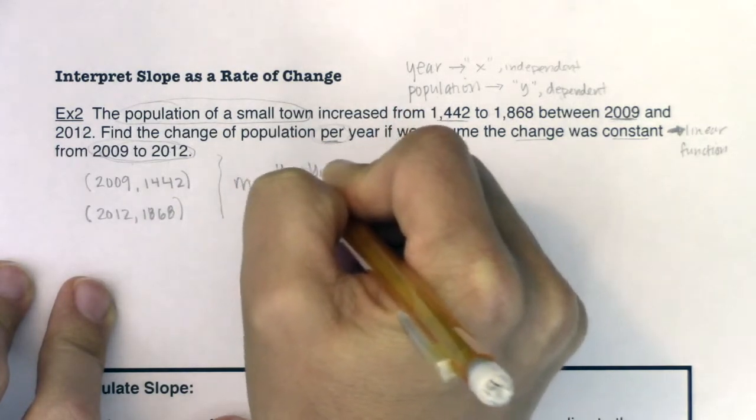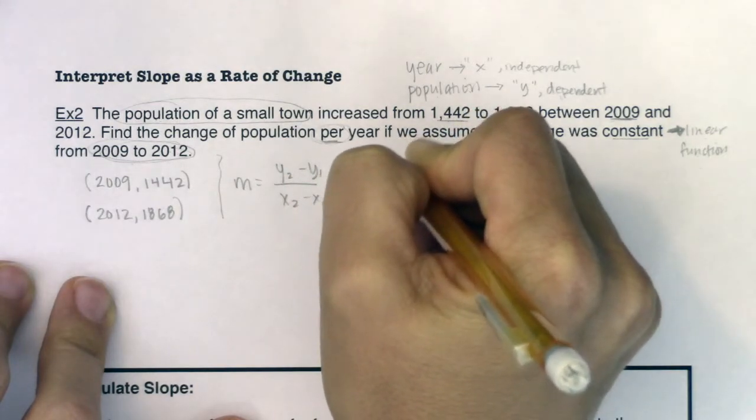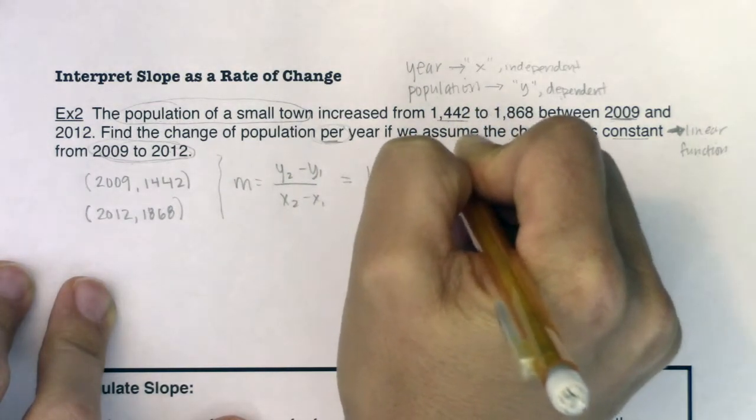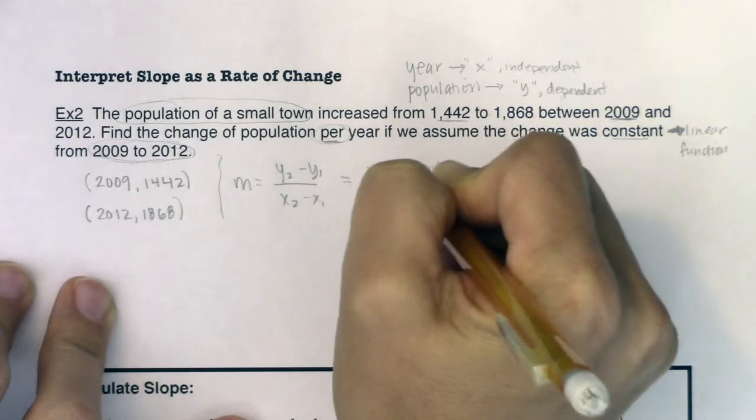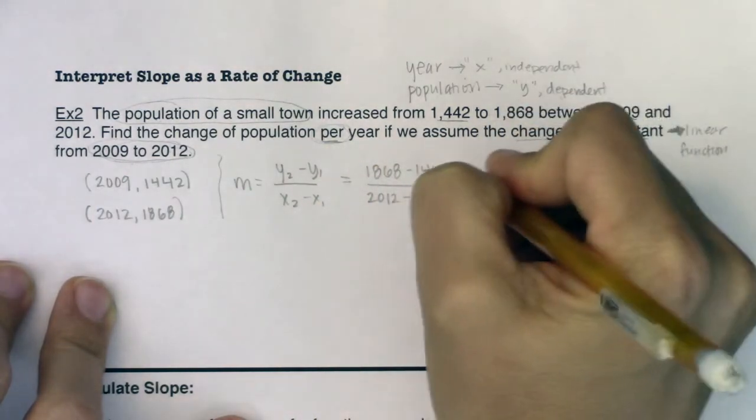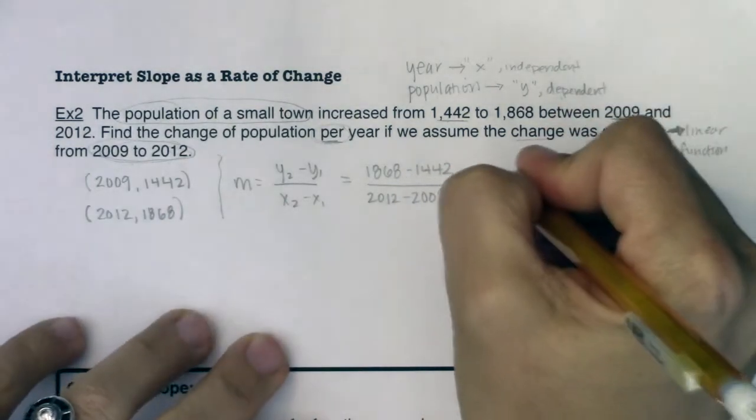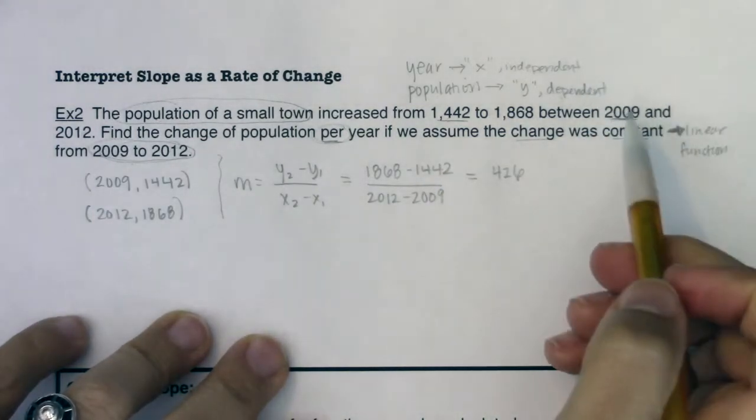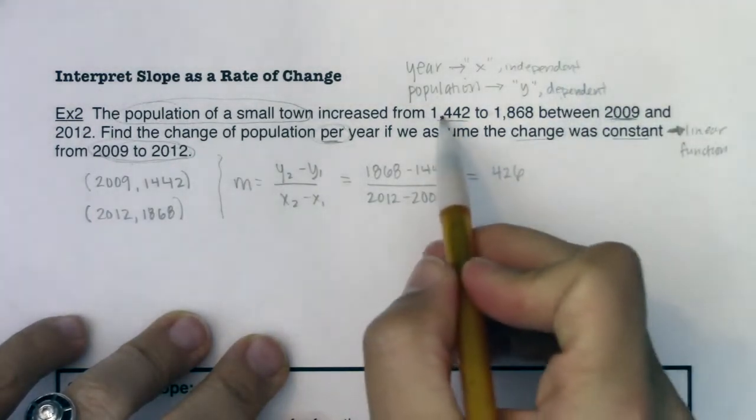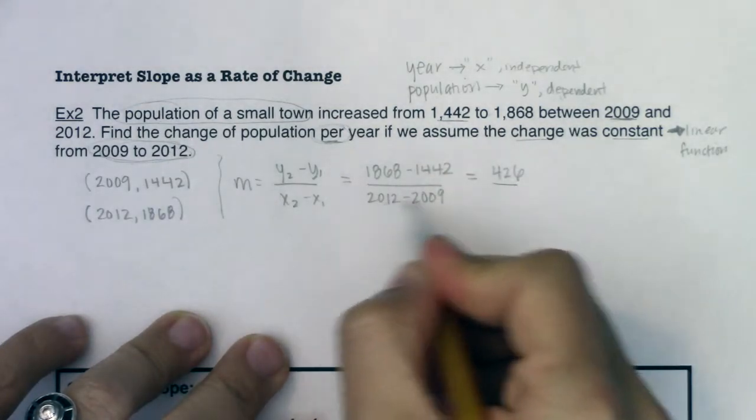So let's see what we have here. We have 1,868 minus 1,442 in ratio to 2012 minus 2009. So if I'm going to go one fraction or one aspect of this fraction at a time, my numerator is 426, meaning in these three years my town grew by 426 people. My denominator is